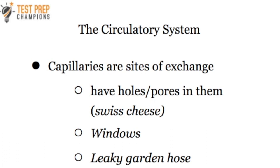Moving forward with the circulatory system, let's take a closer look at what the capillaries do. What I want you to remember about capillaries is that they're sites of exchange. They have little holes or pores in them — some people like to think of these holes like Swiss cheese, or like windows, or even like a garden hose with holes poked in it. Just know that capillaries are sites of exchange.